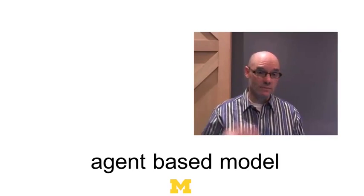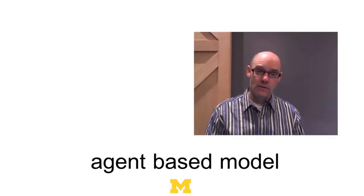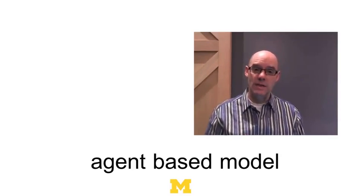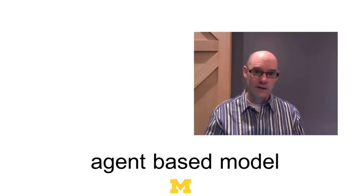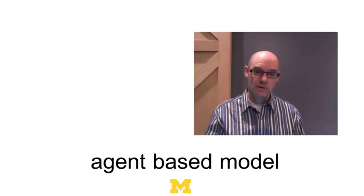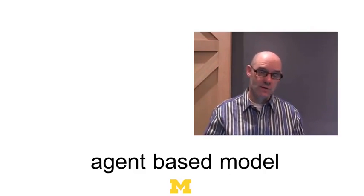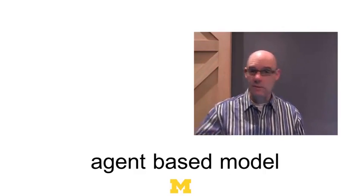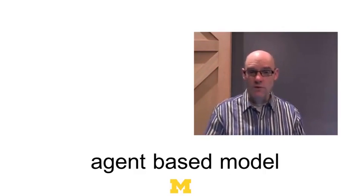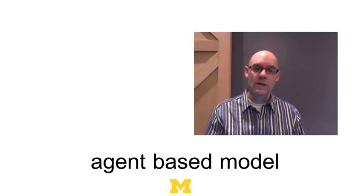An agent-based model has three parts. First, you have the agents — in this case, people. Second, you define their behaviors: what rules do they follow? Third, you aggregate and see what happens. When all these people are following these rules, what do we get at the aggregate level?